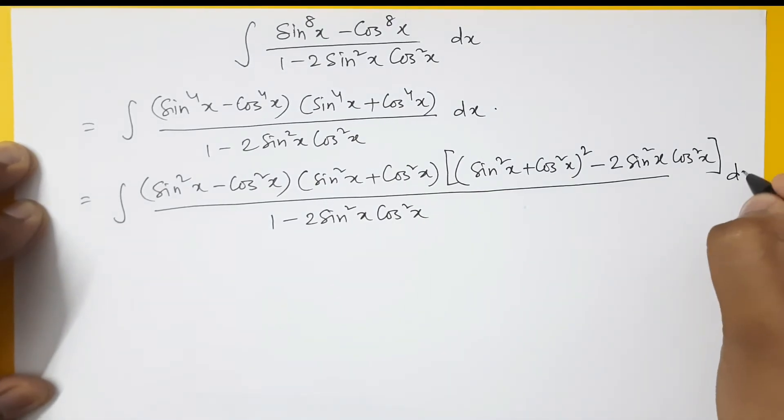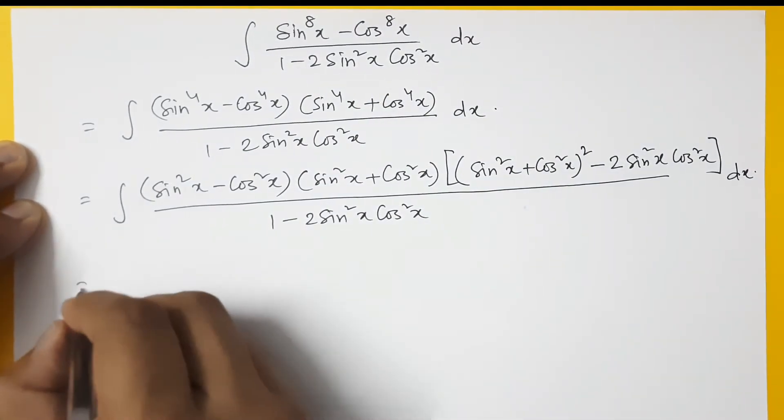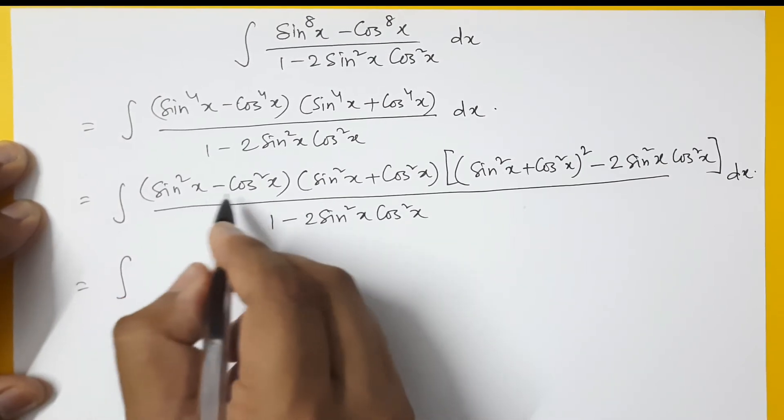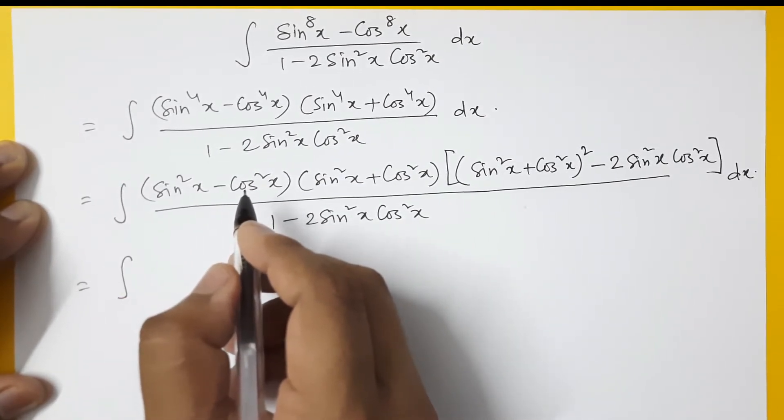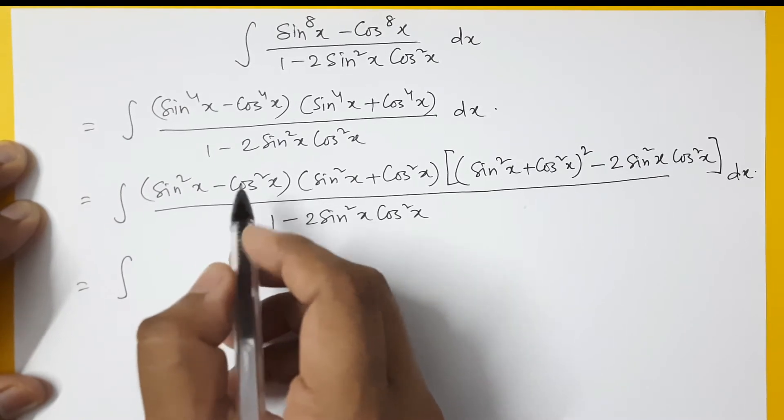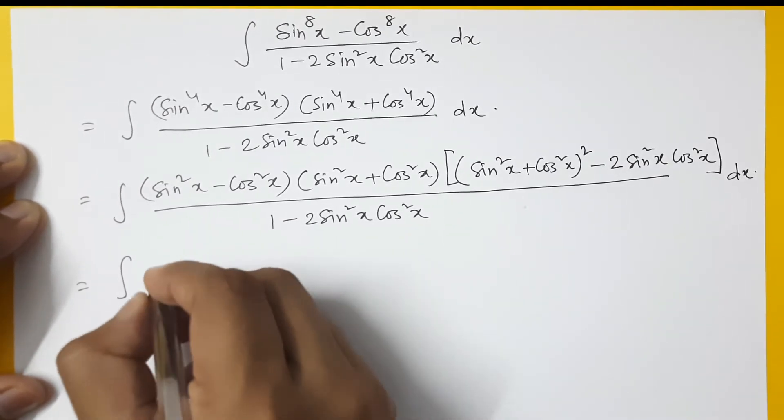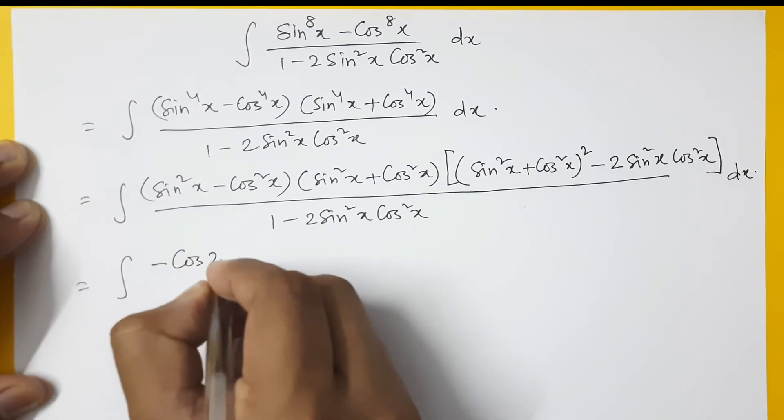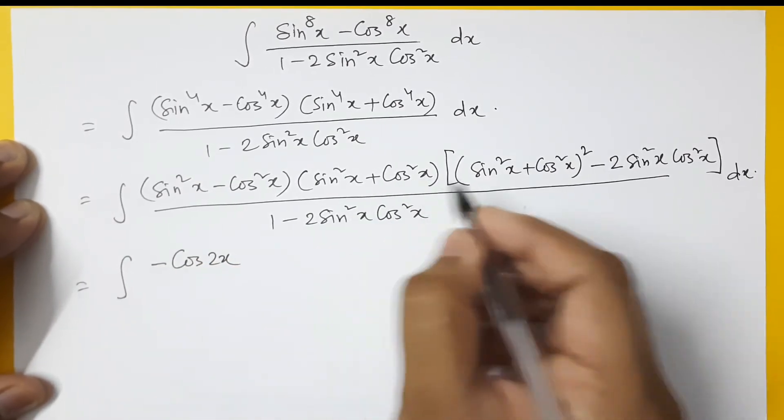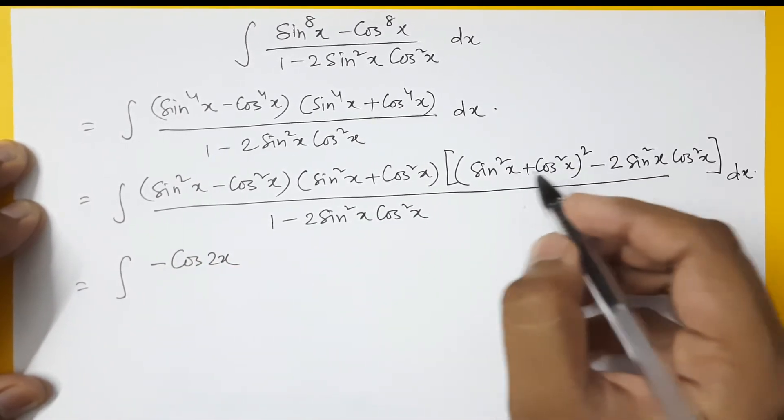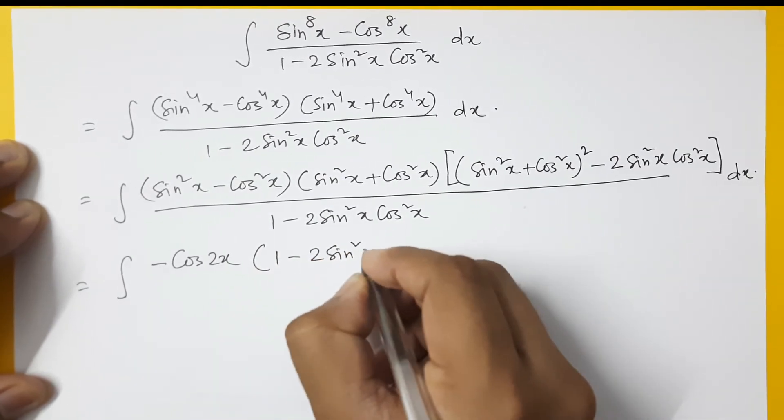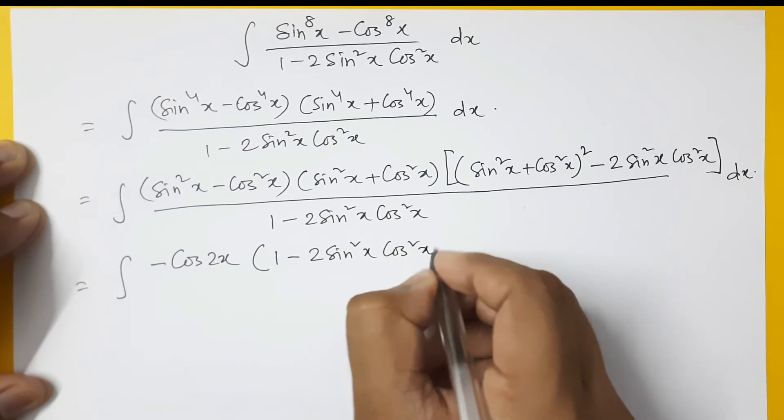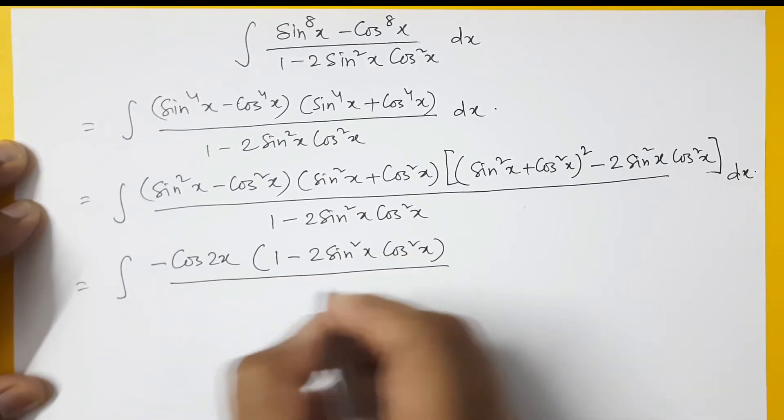So this is nothing but the formula of cos 2x, but the cos 2x formula is cos²x - sin²x, so this will be -cos 2x. So -cos 2x, this is 1, this is also 1. So this will be 1 - 2sin²x cos²x, and then there is the denominator term.